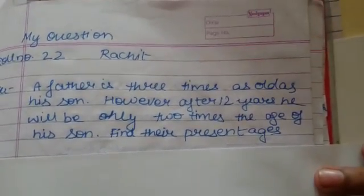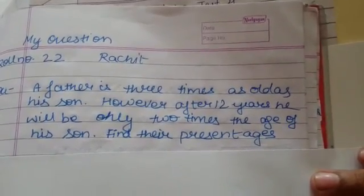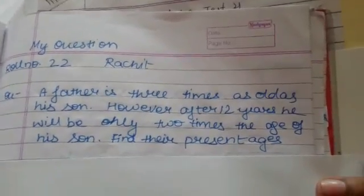Rachit, read the question. A father is three times as old as his son. However, after 12 years, he will be only two times the age of his son. Find their present ages.